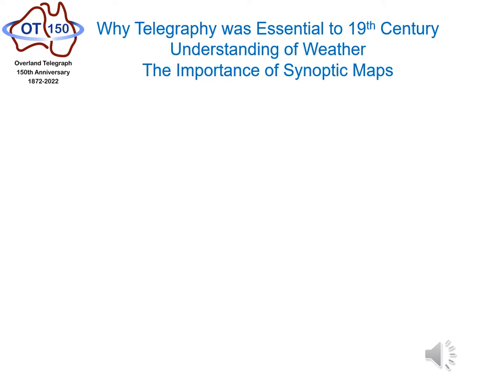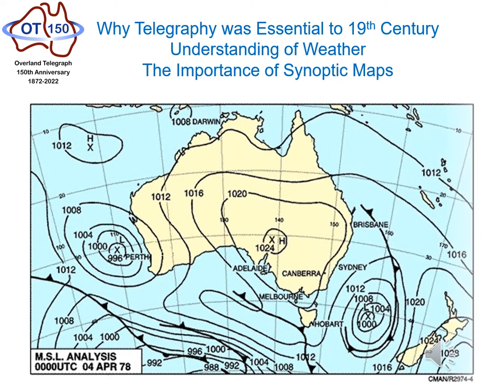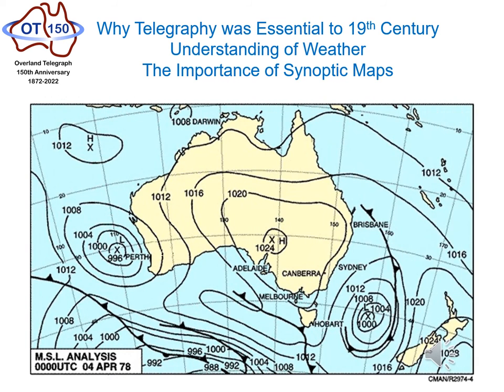As these lines are drawn, a map takes shape showing areas of low and high pressure. A series of these maps drawn over a period of hours and days shows these highs and lows traveling across vast areas of the continent, driving the weather towards us.